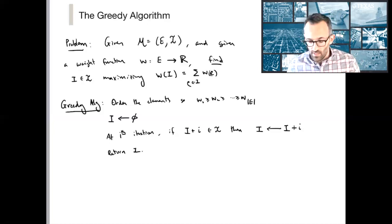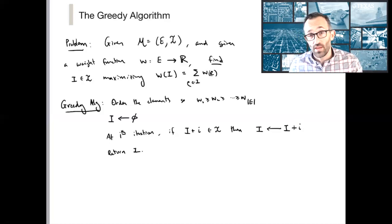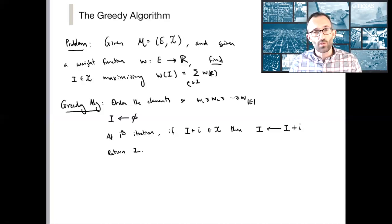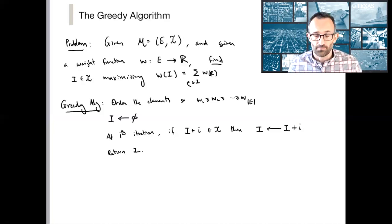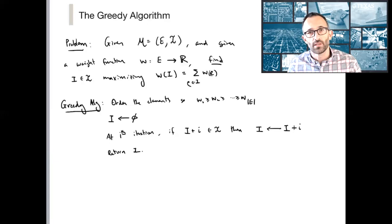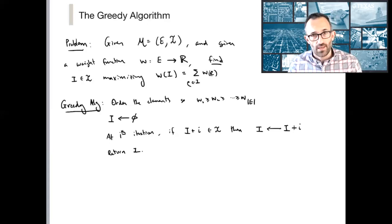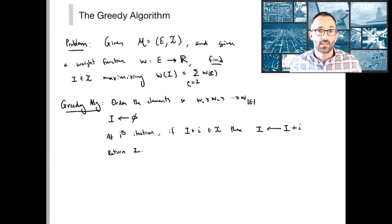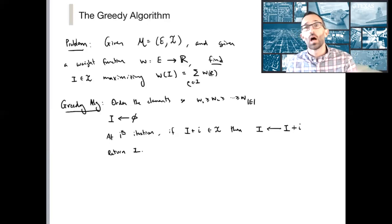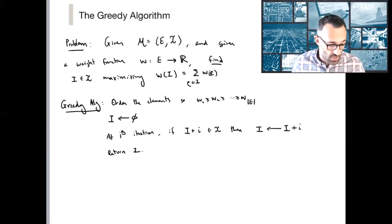Let's run through this. I start with the empty set, look at the first element, which is the heaviest. Unless it's a loop, the first element always satisfies independence, so the algorithm will always add the heaviest element unless it happens to be a loop — for example, the zero vector in a linear matroid. The key question is: could it be possible that we greedily decide to add a heavy, enticing element early on that blocks us from adding many elements downstream? The answer here is no.